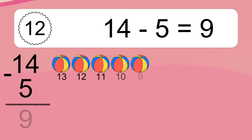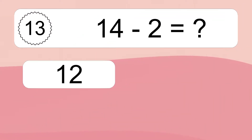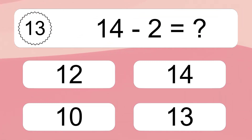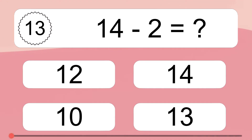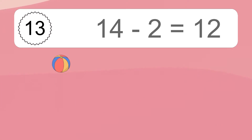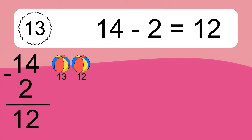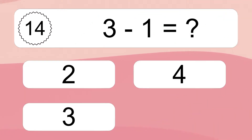14 minus 5 equals 9. Let's count it: 13, 12, 11, 10, 9. 14 minus 2 equals what? 14 minus 2 equals 12. Let's count it: 13, 12.